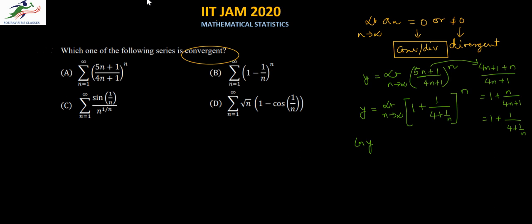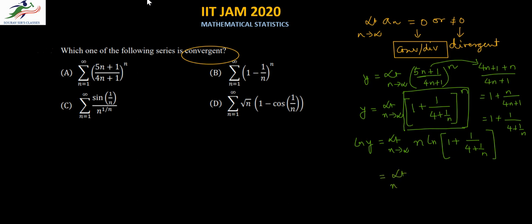Taking the natural log on both sides: ln y equals the limit as n tends to infinity of n · ln(1 + 1/(4 + 1/n)). This can be rewritten as the limit of ln(1 + 1/(4 + 1/n)) divided by 1/n. As n tends to infinity, 1/n tends to 0, making the expression of the form 0/0, so we apply L'Hôpital's rule.